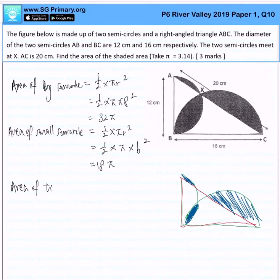Area of the triangle is 12 times 16 times half, half times base times height, and that will give me 96 cm squared.